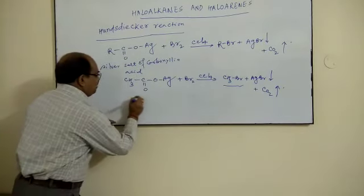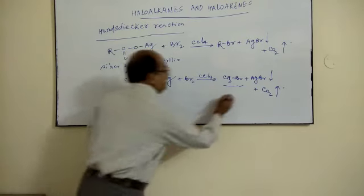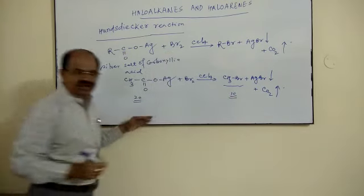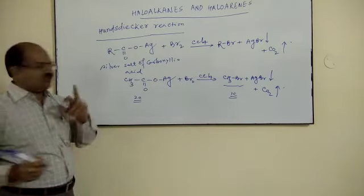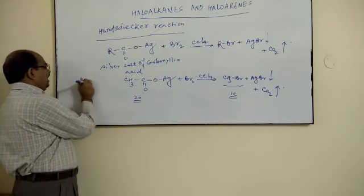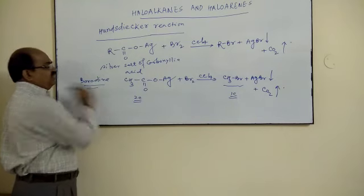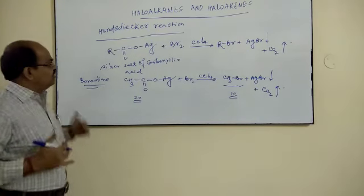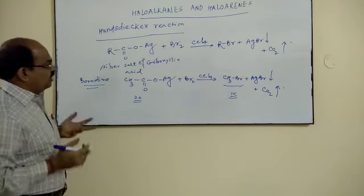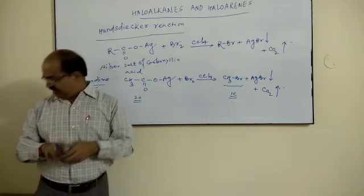In this case, the number of carbons is 2; in this case, the number of carbons is 1. This is called Hunsdiecker reaction or it is also known as your Borodin-Hunsdiecker reaction, Borodin-Hunsdiecker process or Borodin-Hunsdiecker reaction. Now,